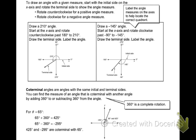To draw an angle with a given measure, start with the initial side on the x-axis and rotate the terminal side to show the angle measure. You all know the quadrants — there are four of them, and you label them going counterclockwise: quadrant one, two, three, and four. When the angle is positive, you rotate counterclockwise, going along the quadrants.